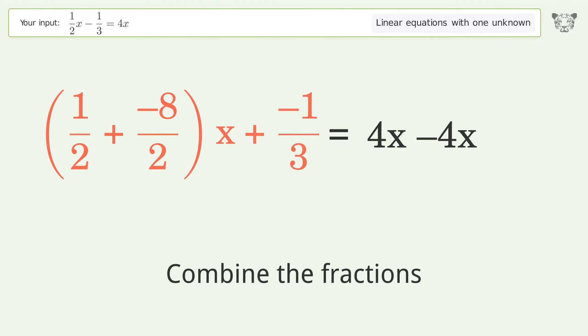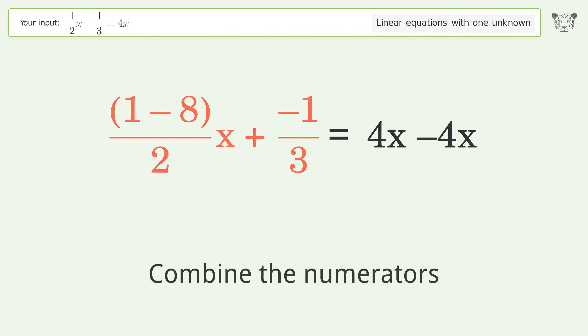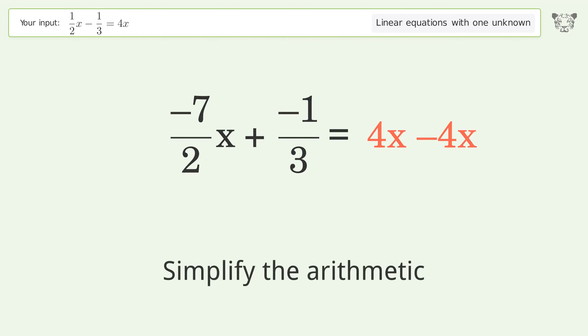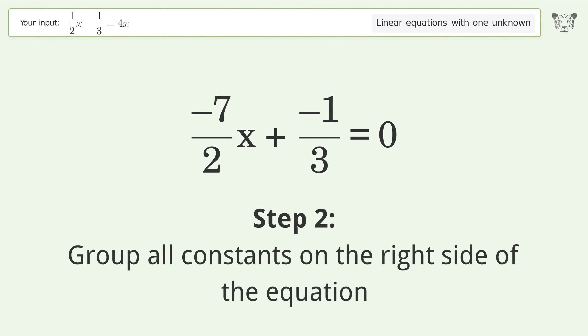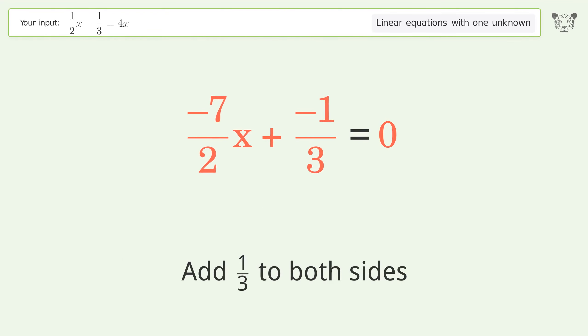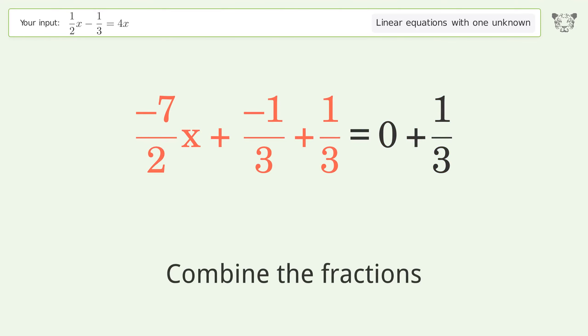Combine the fractions. Combine the numerators. Simplify the arithmetic. Group all constants on the right side of the equation. Add 1 over 3 to both sides. Combine the fractions.